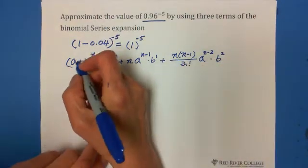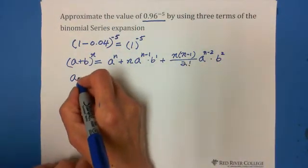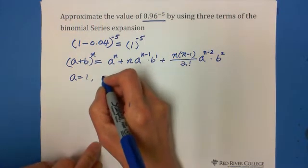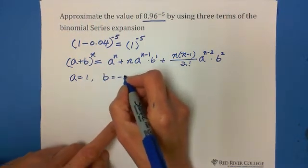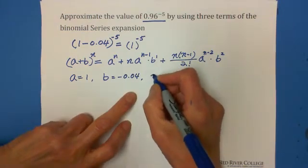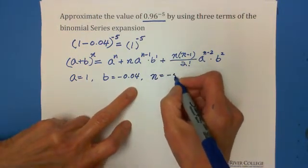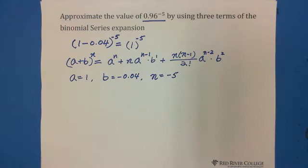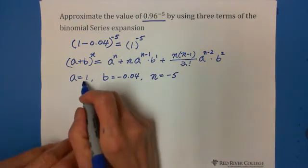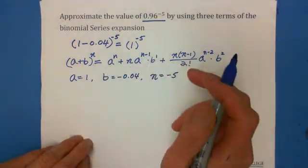In this situation matching this question, a equals 1, b is negative 0.04, n equals negative 5. So we just plug this one into that formula.